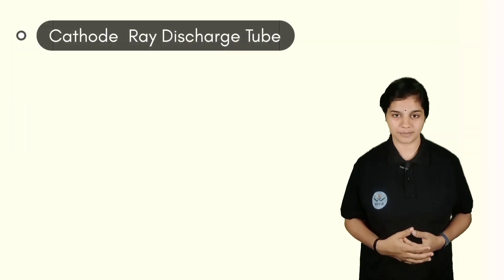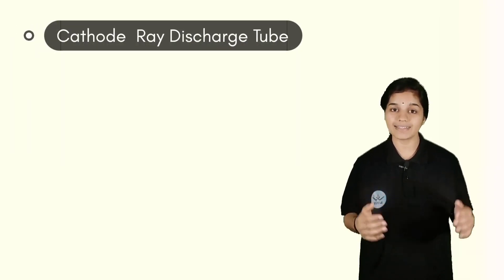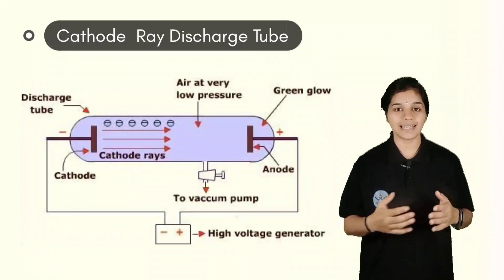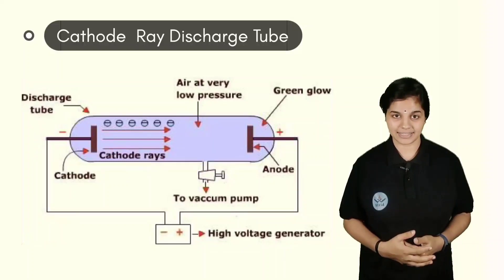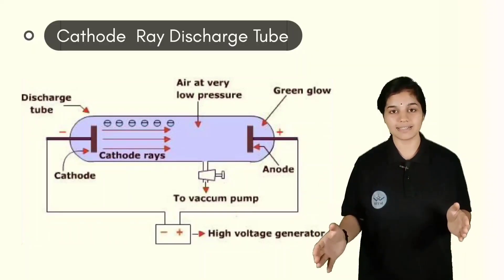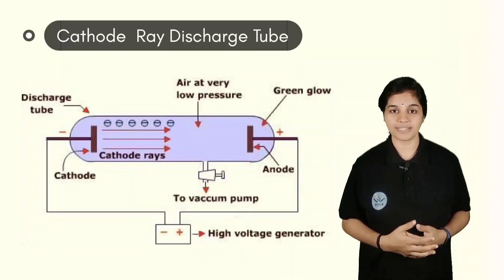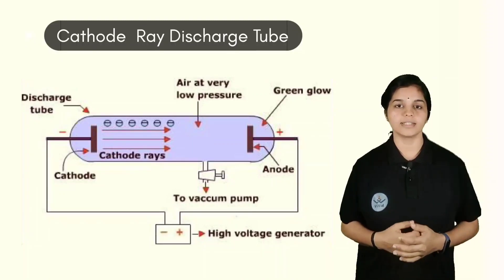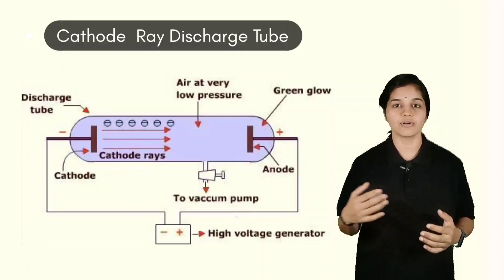The subatomic particle electron was discovered by the cathode ray discharge tube experiment. The cathode ray tube is made up of a glass tube which has metal electrodes on either end, sealed inside. One of the electrodes is the cathode and the other is the anode. Cathode is a negatively charged electrode and anode is a positively charged electrode. The glass tube was filled with inert gases like nitrogen or hydrogen.